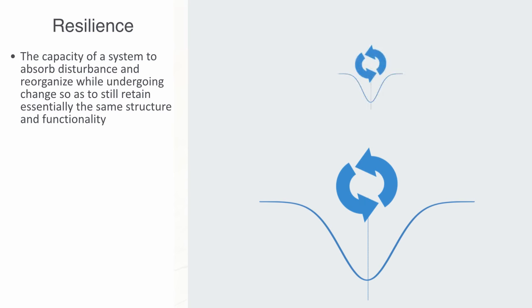When we ask what is the maximum amount the system can be changed before losing its capacity to recover, we are basically talking about the width of the basin of attraction. Wide basins mean a greater number of system states can be experienced without crossing a threshold.